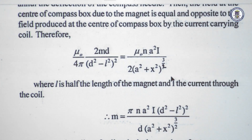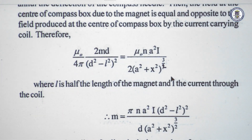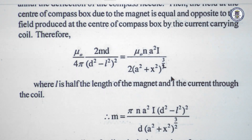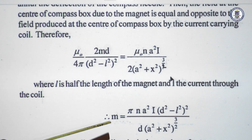From this expression we can determine the moment of the magnet. M is given by: pi times n times a-squared times i times (d-squared minus l-squared) all squared, divided by d times (a-squared plus x-squared) raised to three-halves, where l is the length of the magnet, d is the distance of the center of the magnet from the center of the compass box, and knowing all these quantities we can determine the magnetic moment M.